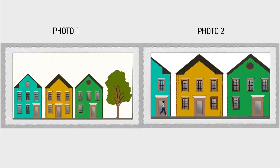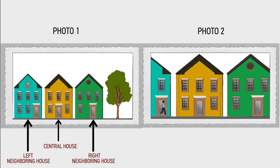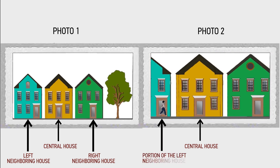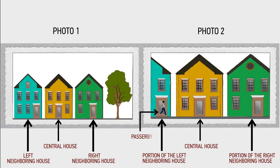While the first image includes a house in the center, a left neighboring house, and a right neighboring house — all three houses are captured in their entirety in the first image. The second image only includes a portion of the left and right neighboring houses. Further, the second image includes a passerby which is not present in the first image. Additionally, the first image includes a tree which is not present in the second image.